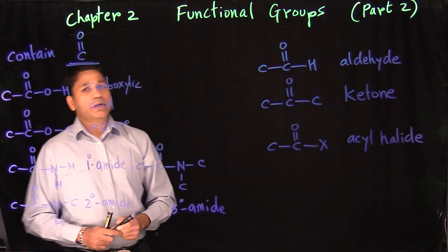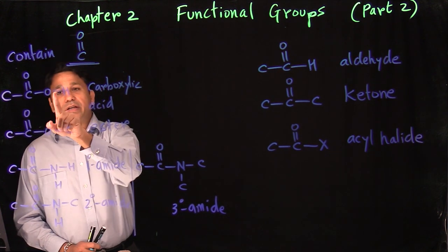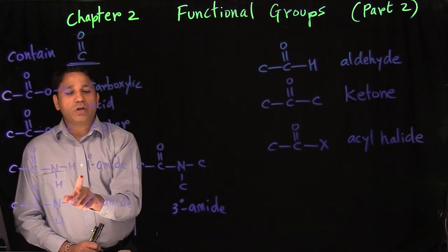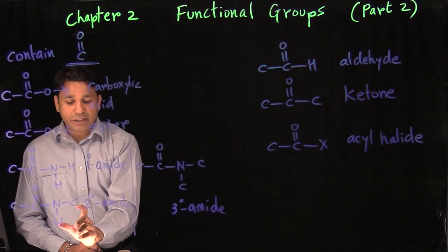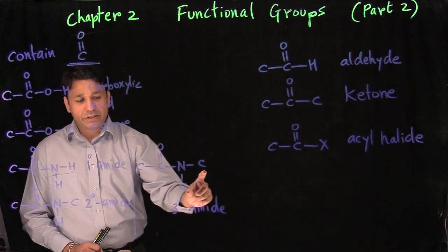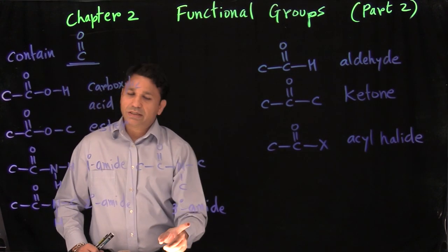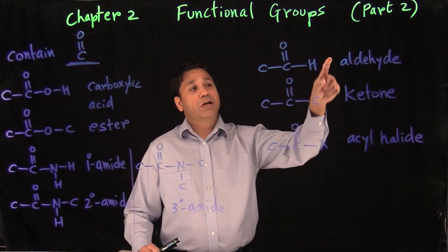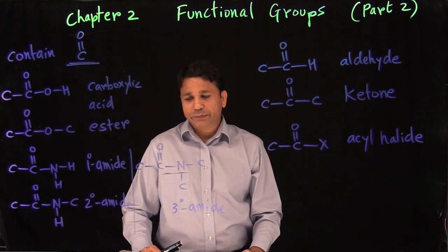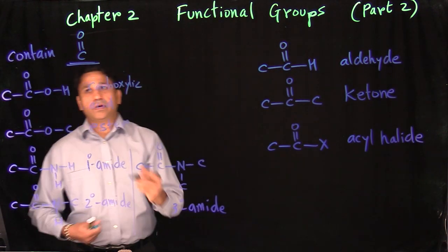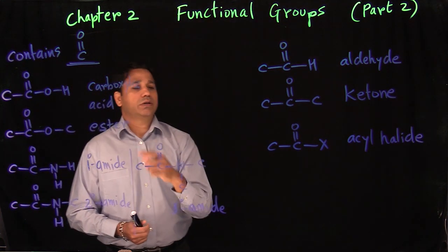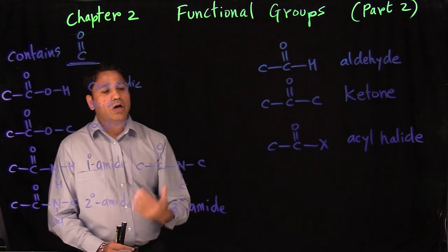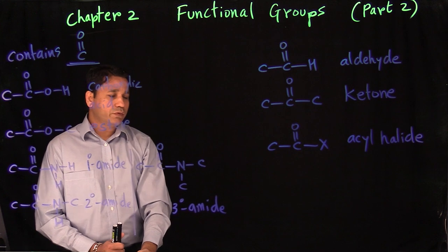To memorize these, if you know one you can identify the other. If OH gives carboxylic acid, replacing that hydrogen with a carbon gives an ester — they go hand in hand. For amides, just count hydrogens on the nitrogen: two hydrogens is primary, one hydrogen is secondary, no hydrogens is tertiary. Chart three covers all functional groups with the carbon-oxygen double bond.